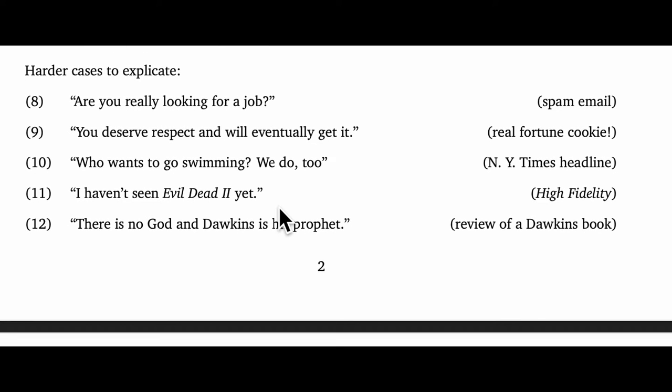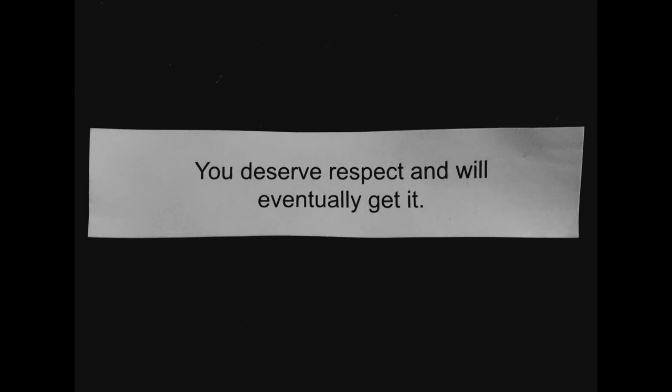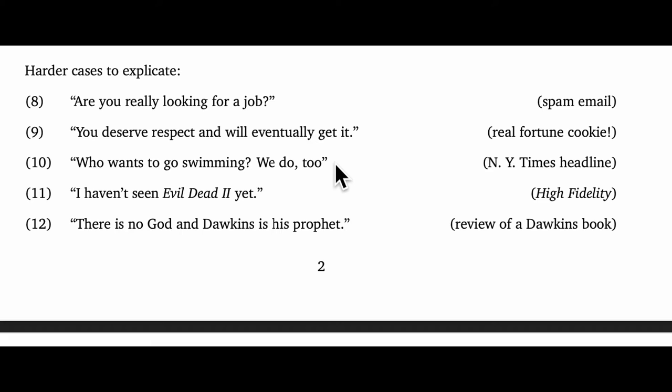I collected a few other cases that are somewhat harder to make sense of. For the spam email subject "are you really looking for a job?", I can tell there's a presupposition triggered by "really," but I can't quite spell out what it is — it seems to signal that I did something to indicate I was looking for a job, and the sentence questions my commitment in that effort. There's also a funny insult from a fortune cookie: "You deserve respect and will eventually get it" — this presupposes that I don't currently get respect. I've also complained about the New York Times and its manipulations with "who wants to go swimming? We do too" — it can't be just anyone; it has to be someone salient, and the reader hasn't made such a commitment. That's why it's irksome.